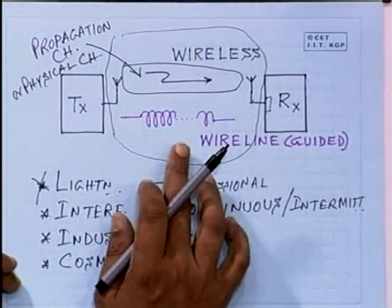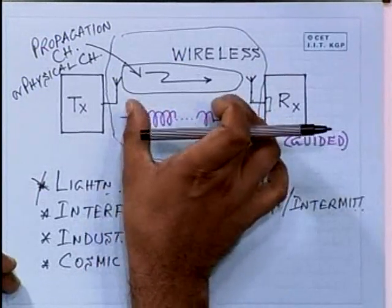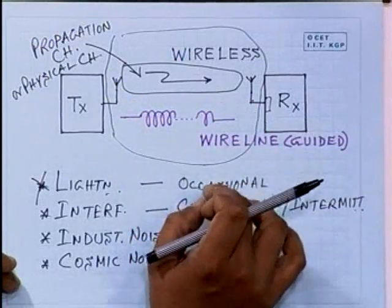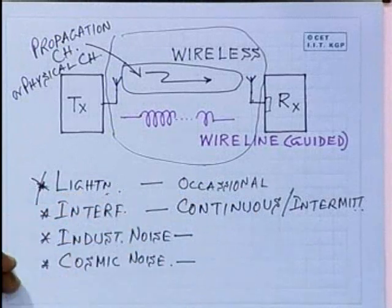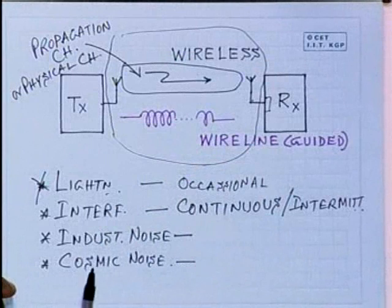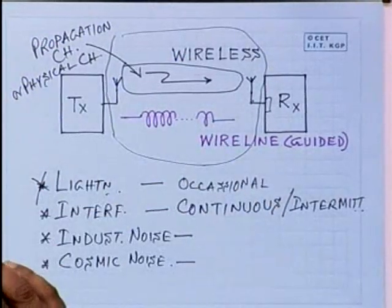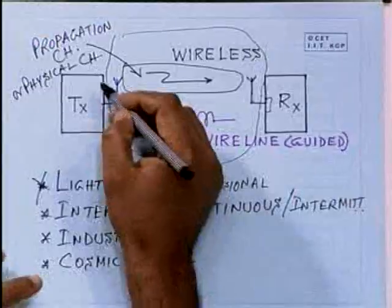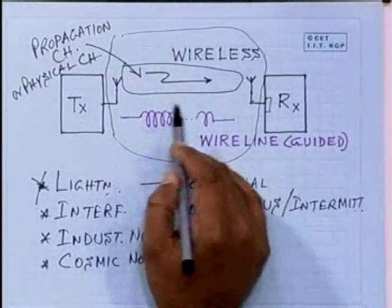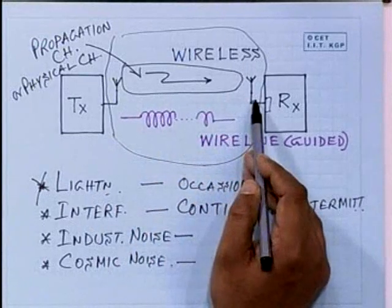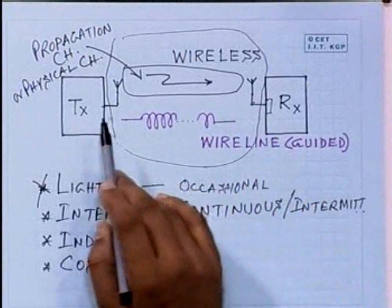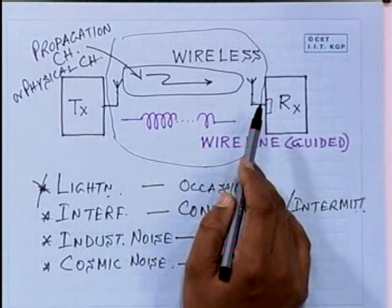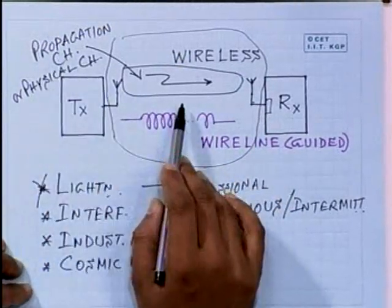Before discussing wireline channels, let us complete the designation of channels. From now on, we will try to be particular about using an adjective when we specify a channel. The space between the transmitting and receiving antennas can be called the propagation channel or physical channel. For those designing antenna systems, it is sufficient and necessary to understand and characterize this propagation channel. For those designing amplifiers in the transmitter — up-converters, power amplifiers — and corresponding blocks in the receiver, it may not be necessary to understand every detail of the antenna system.